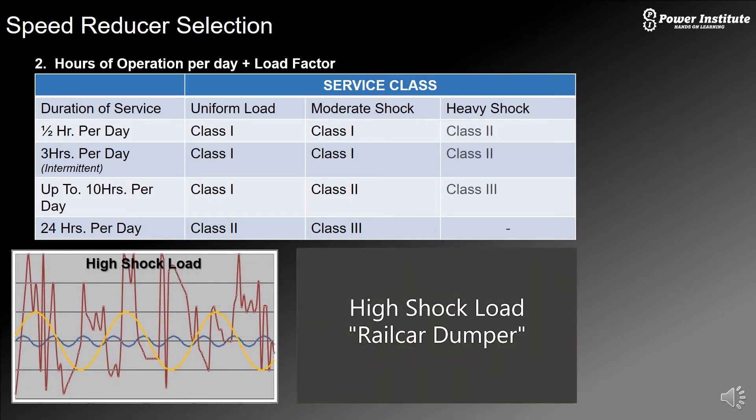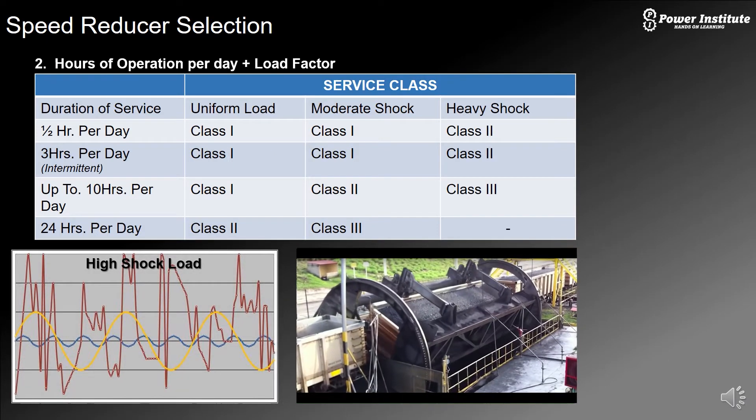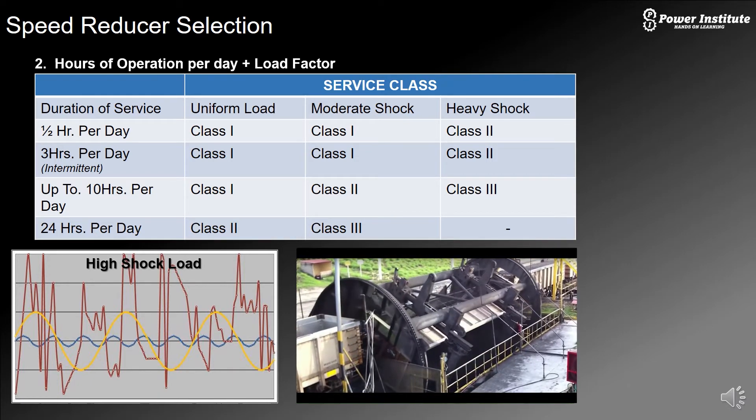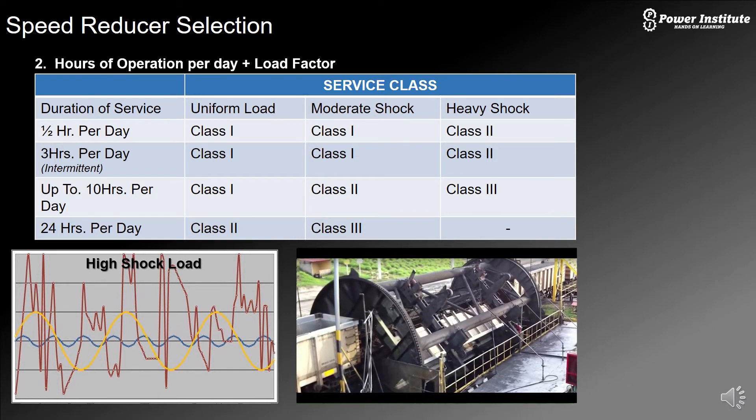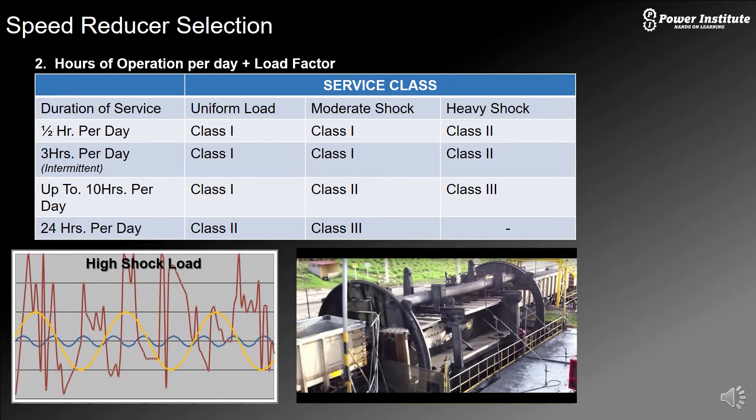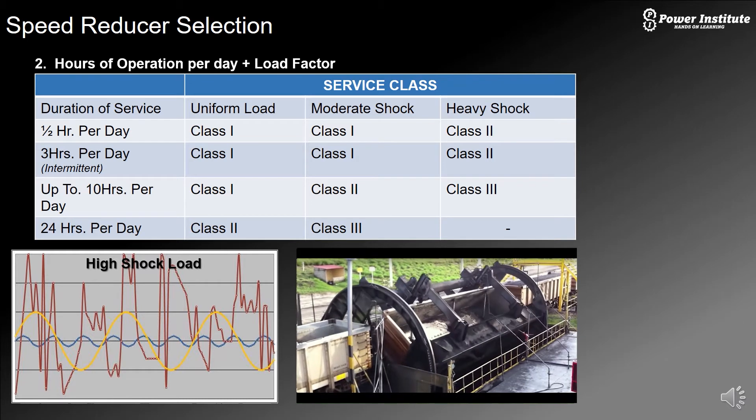Next you have heavy shock. As I mentioned before, the rail car dumper - that's a lot of weight and all that weight is eventually going to be seen by the gearbox. When this coal falls out of there, there's a lot of weight being transferred back to that gearbox. So that would definitely be a heavy shock situation.